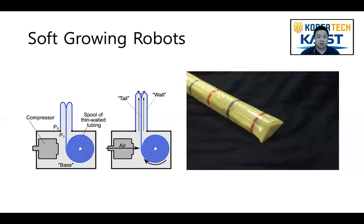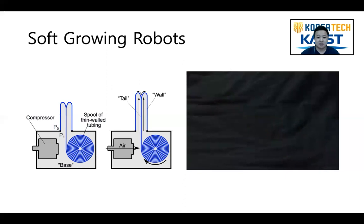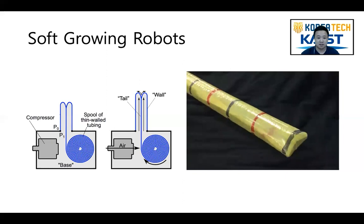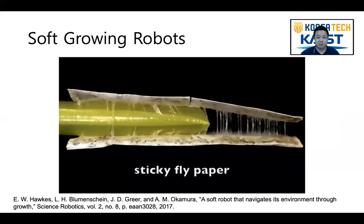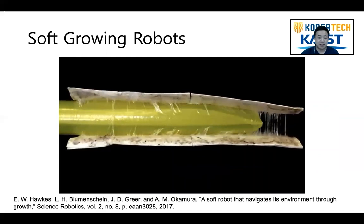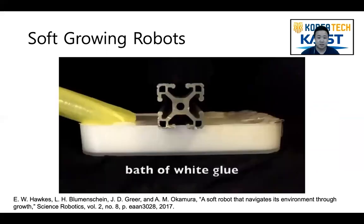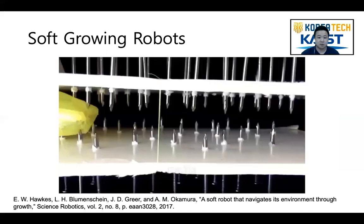The inner material is called the tail and the outer material, which does not move away from or toward the base, is called the wall. Since the robot grows by air pressure, it can pass through tight gaps and can operate in environments which may be sticky or slippery and may also contain sharp obstacles.